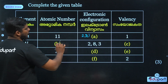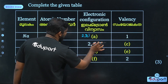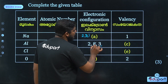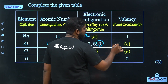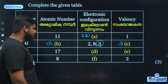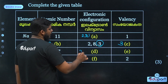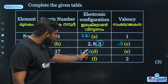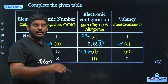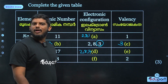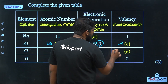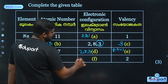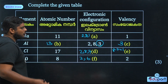Aluminium: atomic number 13, electronic configuration 2, 8, 3. Valency is 3 (less than 4). Chlorine: atomic number 17, electronic configuration 2, 8, 7. Greater than 4, so valency is 8 minus 7 equals 1. Oxygen: atomic number 8, electronic configuration 2, 6. Valency is 8 minus 6 equals 2.